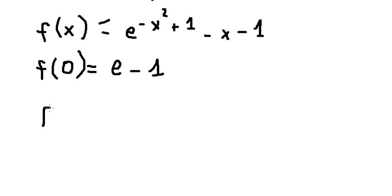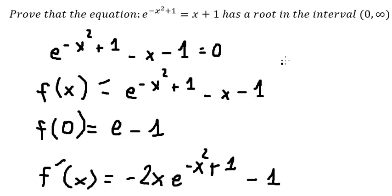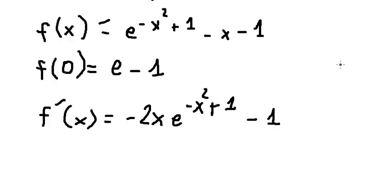Next, we need to compute the first derivative f prime of s. After taking the first derivative, we have negative two s times e to the power of negative s squared, plus one, minus one.